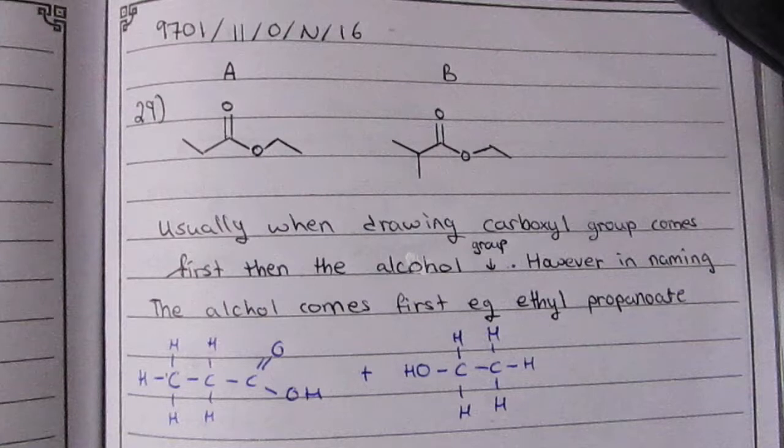Usually when drawing an ester, the carboxylic acid comes first before the alcohol, but this is not always the case. Stay tuned for the end to find out why. When it comes to naming, it's always the alcohol first and then the carboxylic acid, for example, ethyl propanoate.